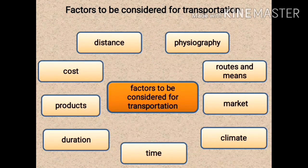The next factor is cost. When choosing among alternatives — roadway, railway, or airways — the budget or cost of the mode of transport is a very important factor, because the cost can vary based on the type and amount of goods being transported.